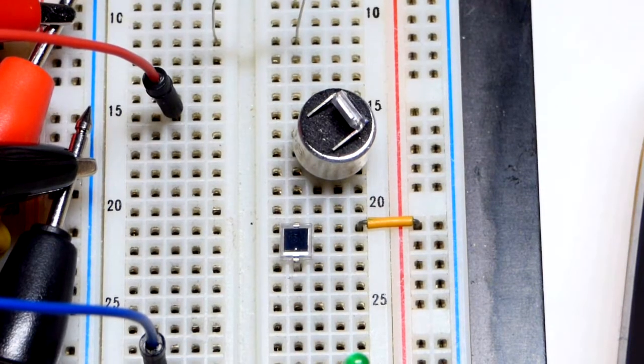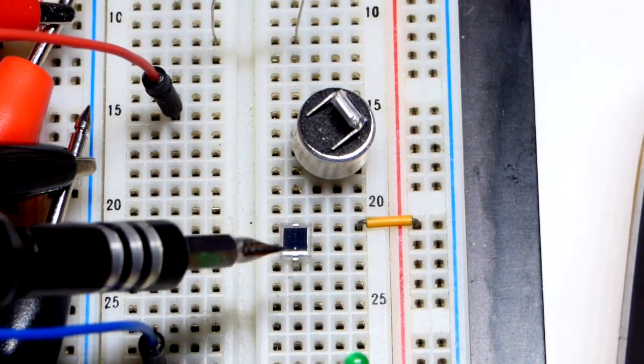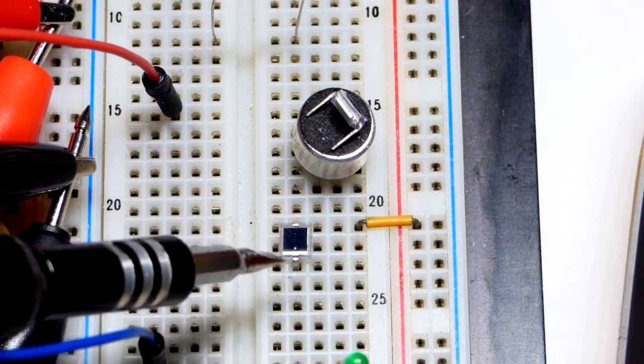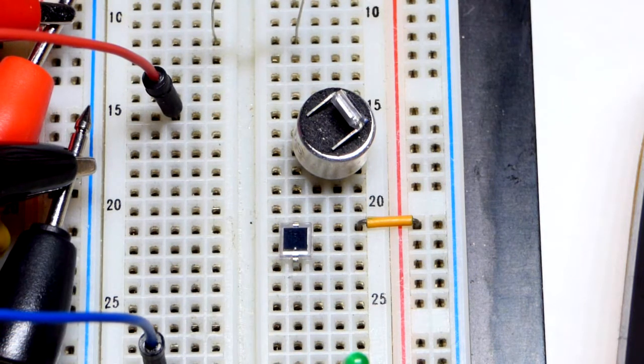So now in this video we're going to look at the BPW34. It is a photodiode, a PIN photodiode.